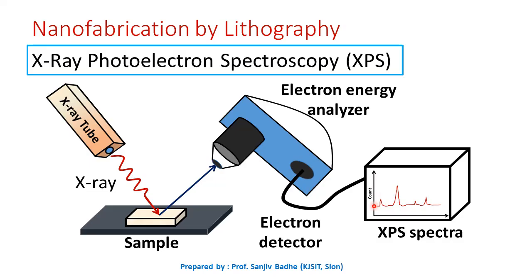This graph of count of electrons versus energy, or intensity of electrons versus energy, is called the XPS spectra. With the help of this XPS spectra, we can identify the elements present on the sample surface.